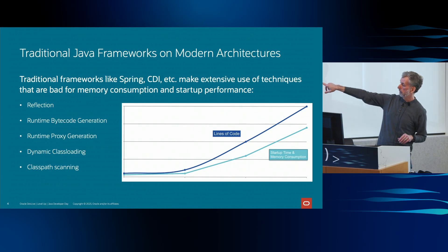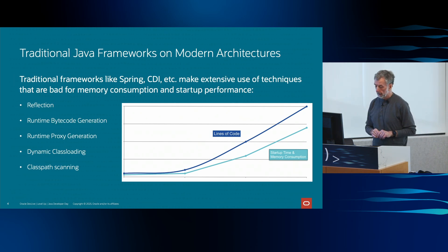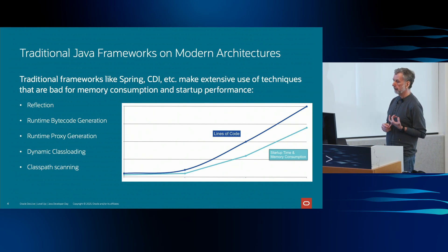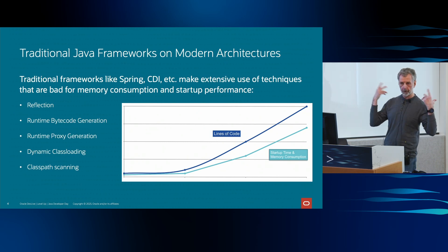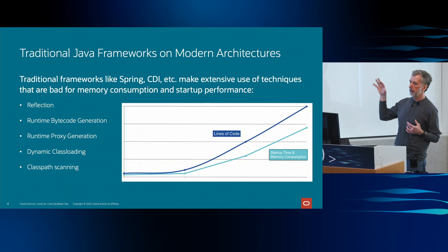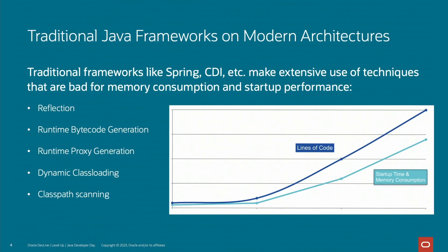This graph is completely made up but fairly representative — not actual computed numbers. One of the things we found with Spring — and when I say Spring, hear that as Spring plus Spring Boot — is that a lot of the techniques Spring, Spring Boot, CDI, and Grails use waste a lot of memory and slow down your application. For the most part it's worth that cost because you get an incredible developer experience, but when you're trying to create really tight, fast, small applications, that bloat really starts to add up.